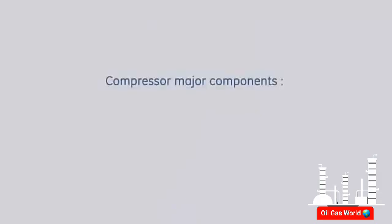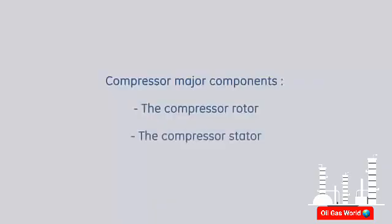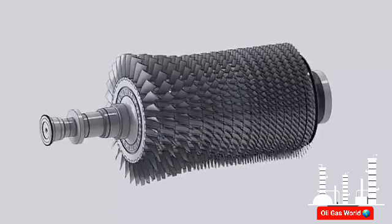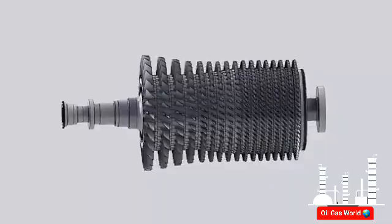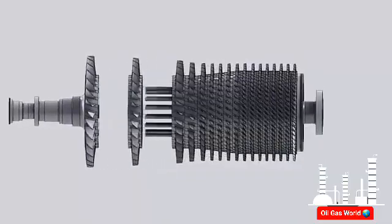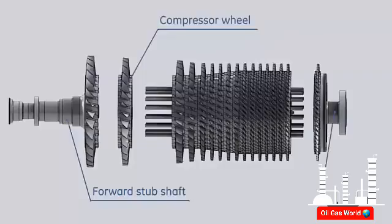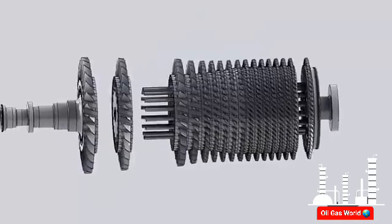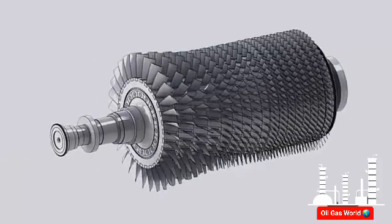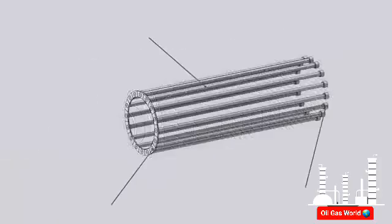The compressor consists of two major components: the compressor rotor and the compressor stator. The compressor rotor has 17 stages of rotating blades. It is assembled of 15 individual wheels and two stub shafts. All wheels are held together with 16 tie bolts and nuts.